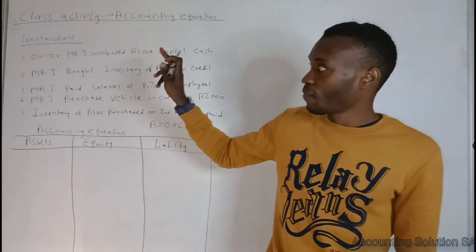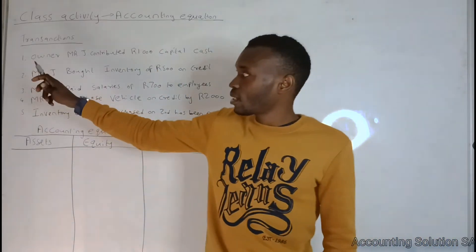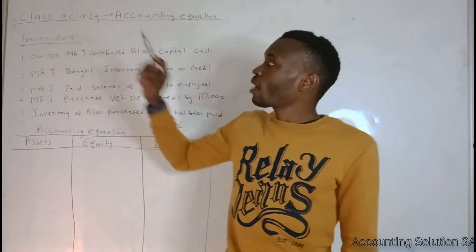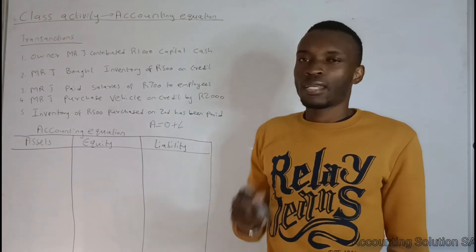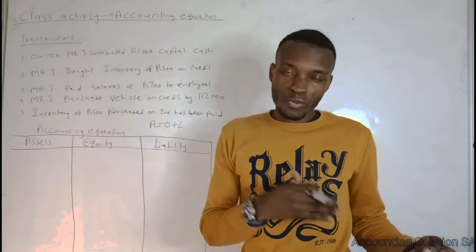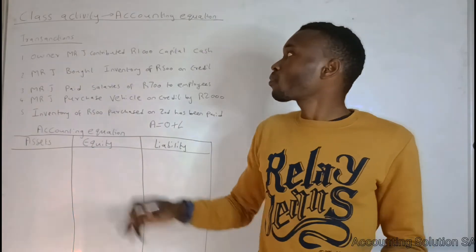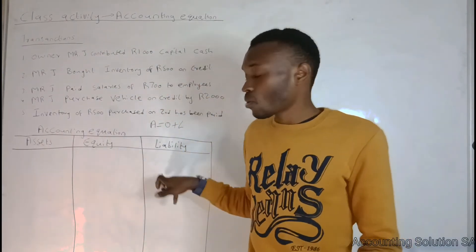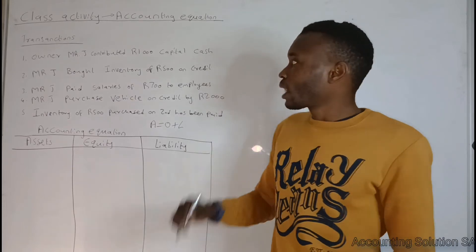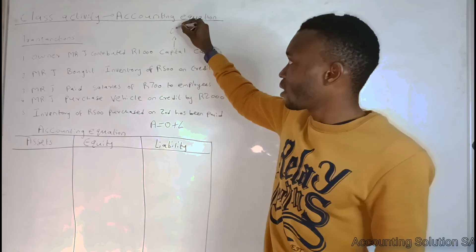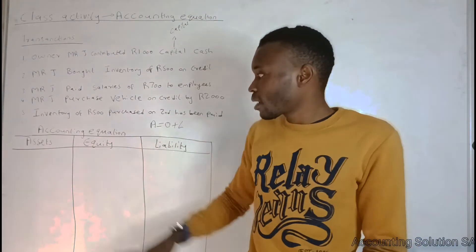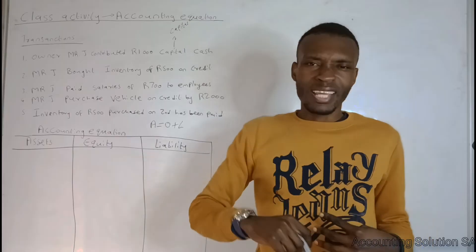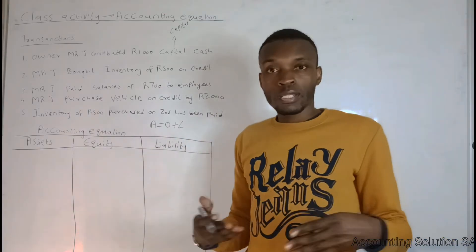Let's do our first transaction. Transaction 1: Owner Mr. J contributed R1,000 capital in cash. In order to start a business you have to contribute capital, so he contributed R1,000 to run his business. We must identify two components: number one, capital — capital falls under equity. Number two, we identify cash, but we call it bank because we put money inside the bank.